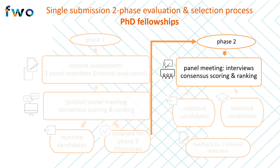Now we arrive at the second phase of the selection process, which is the interview. The FWO invites the candidates selected in step one to a face-to-face meeting with the panel in Brussels. During this meeting the focus is mainly on the qualities of the researcher, including the extent to which they master the project and have an appropriate scientific attitude. Each interviewee receives a new score for the candidate criterion and where necessary project scores are also adjusted. This leads to a final ranking of candidates which determines who is funded and who is not. In most panels half of the interviewed candidates are selected to receive a fellowship.